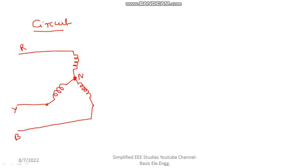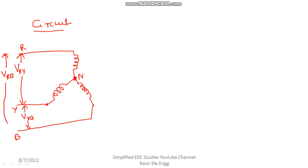Next, I need to mark the line voltage. Line voltage is the voltage across any two lines. For example, VRY is one line voltage. Similarly, another line voltage is VYB, and the third line voltage between R and B is called VRB — that means voltage across R and B.